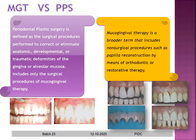What is the difference between Mucogingival Therapy and Periodontal Plastic Surgery? Periodontal plastic surgery is purely a surgical term, defined as a surgical procedure performed to correct, eliminate anatomic, developmental, or traumatic deformities of the gingiva or the alveolar mucosa. This term includes only the surgical procedures, whereas Mucogingival Therapy is a broader term that includes non-surgical procedures such as papilla reconstruction by means of orthodontic therapy or restorative therapy.